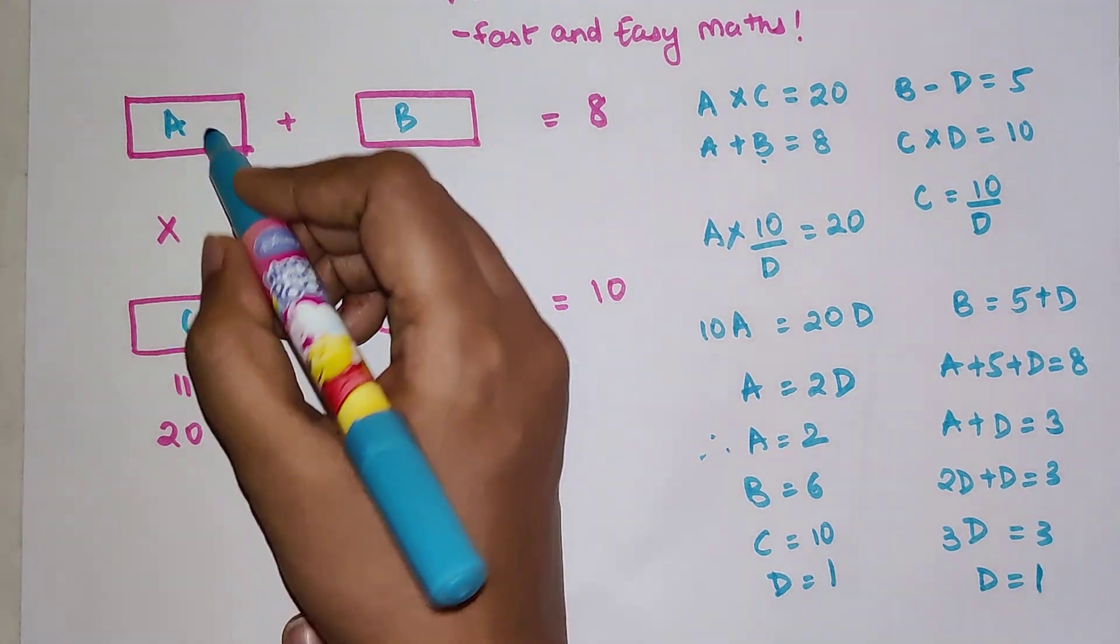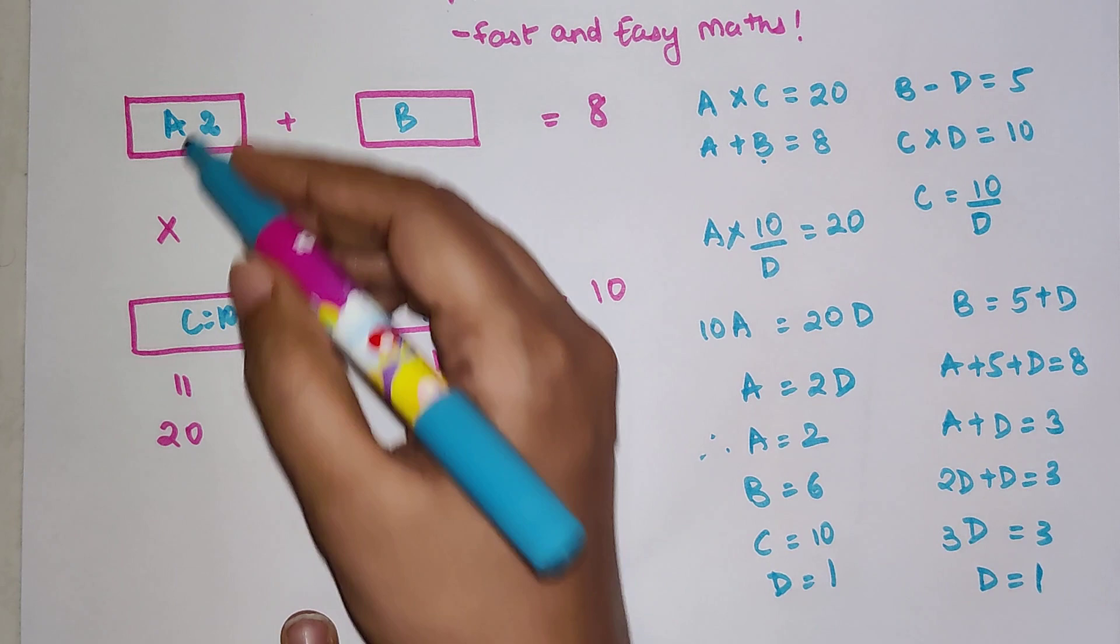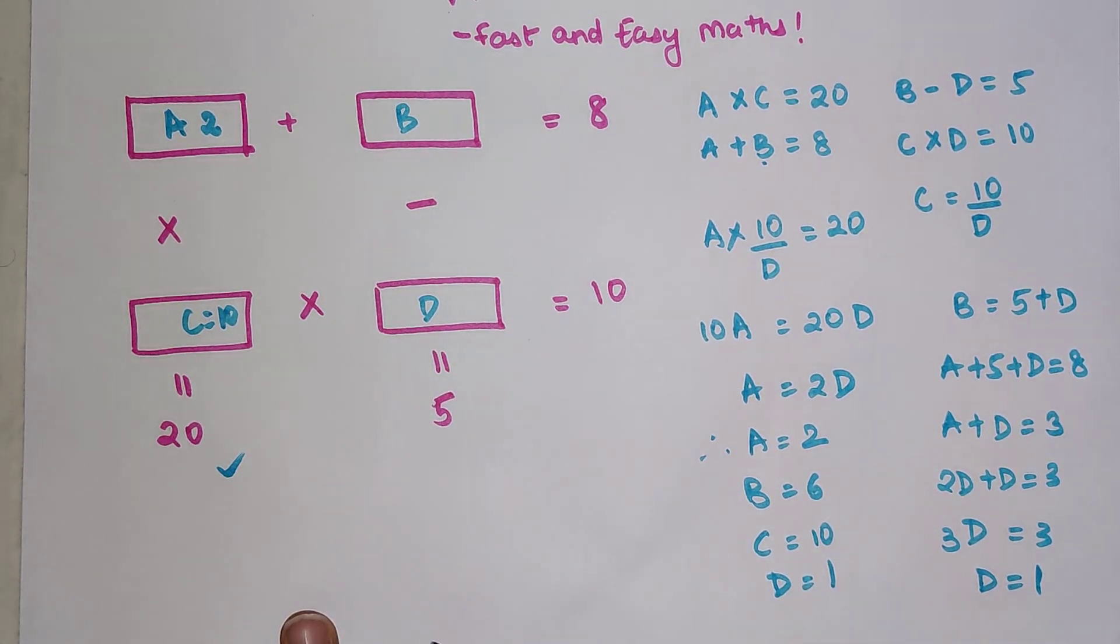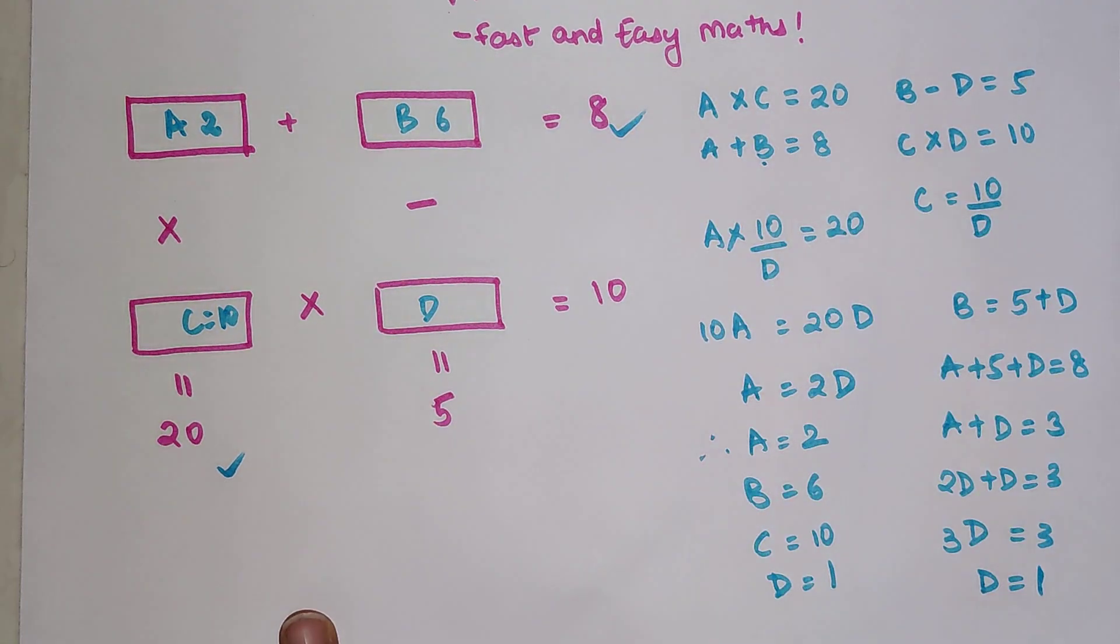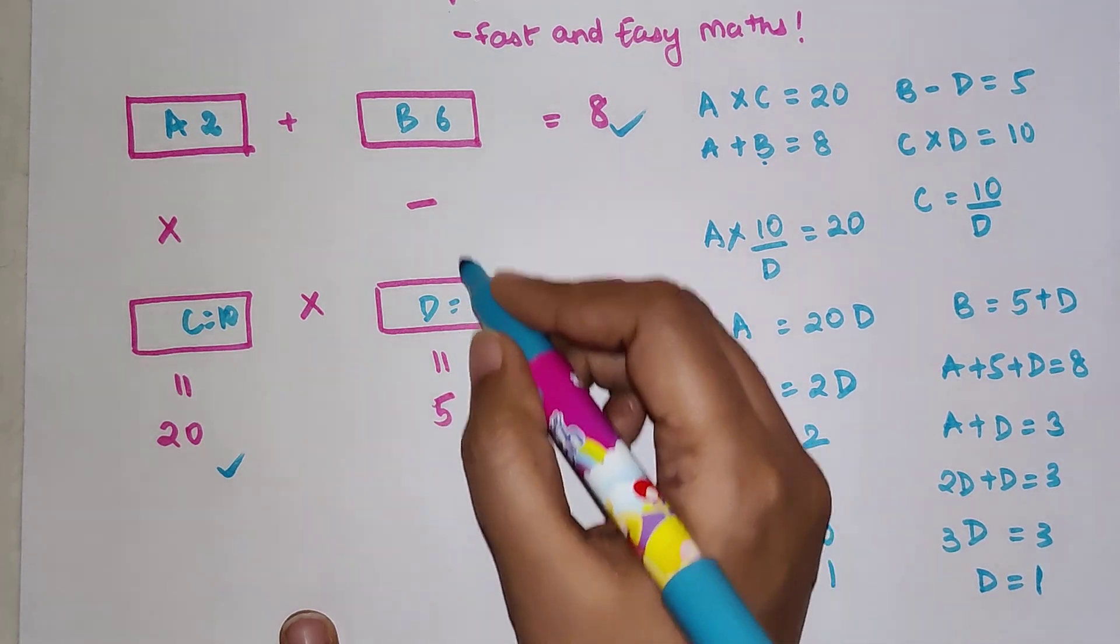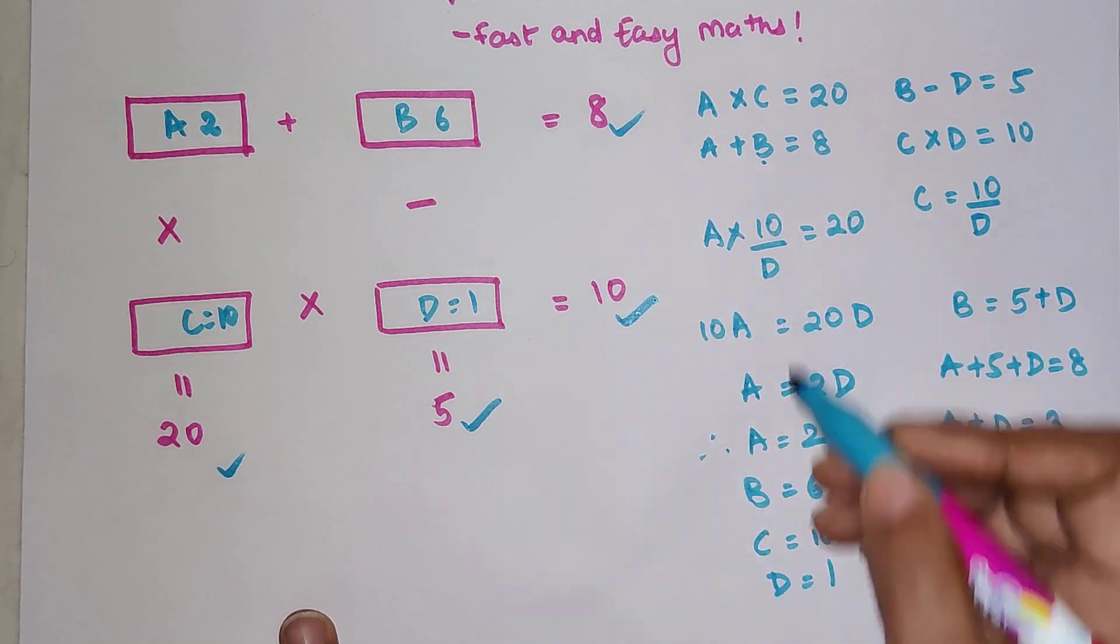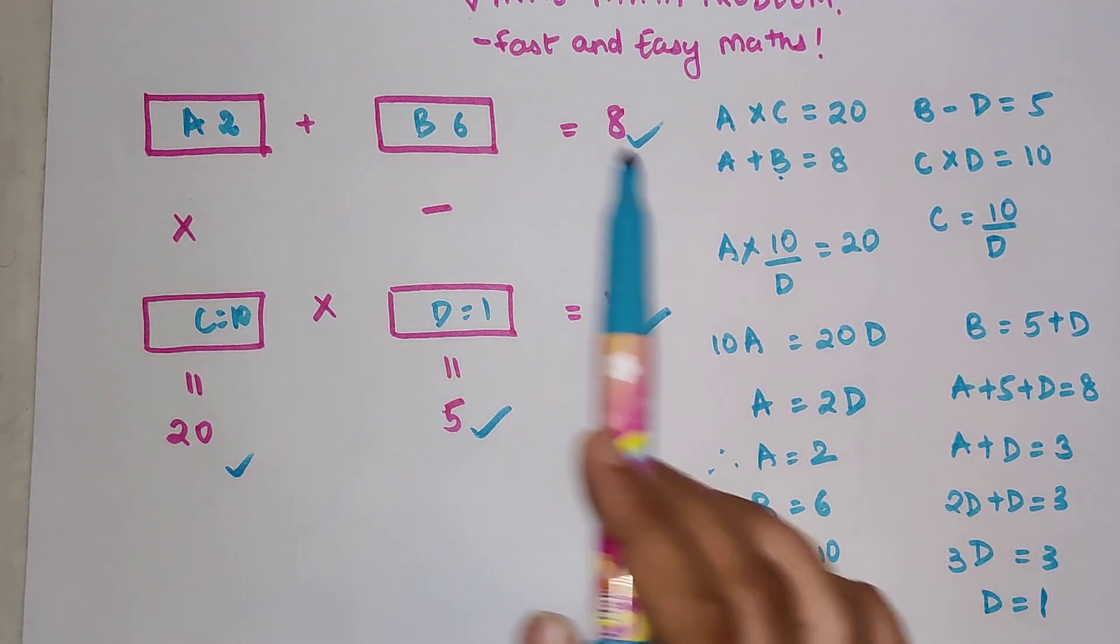Now in order to cross-verify, the value of A is 2, the value of C is 10, so 2 times 10 is getting you 20—this is correct. Now the value of B is 6, so 2 plus 6 gets you 8—that is also correct. The value of D is 1, so 6 minus 1 will get you 5, and 10 times 1 is getting you 10. So you saw, in this way with the help of algebra, we can find all these four values which are making sure these entire equations are coming out to be true.